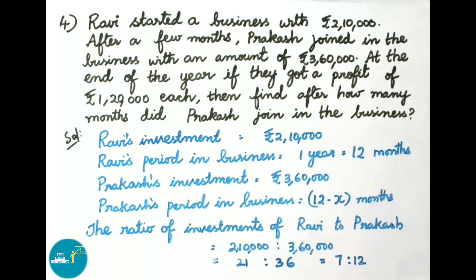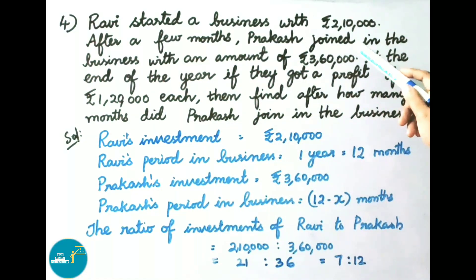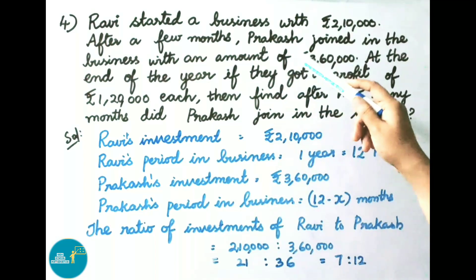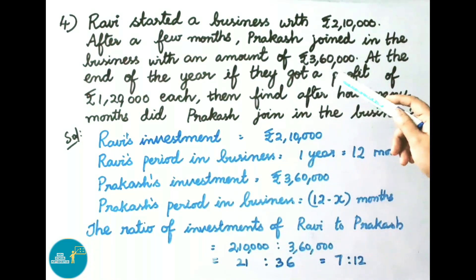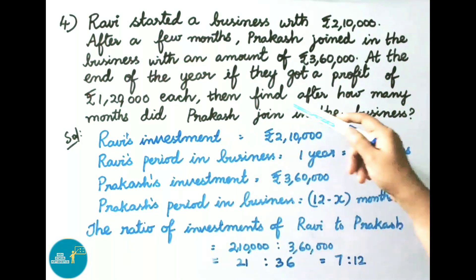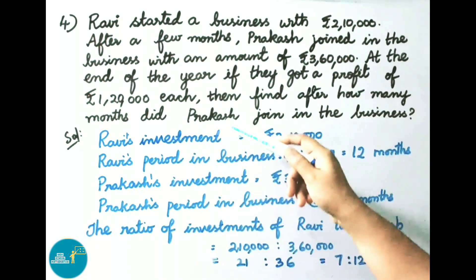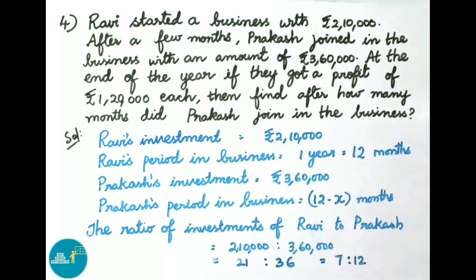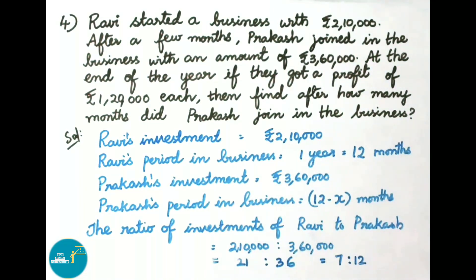Question number 4: Ravi started a business with 2,10,000 rupees. After a few months, Prakash joined in the business with an amount of 3,60,000 rupees. At the end of the year, if they got a profit of 1,20,000 each, then find after how many months did Prakash join in the business. Let us see the solution.